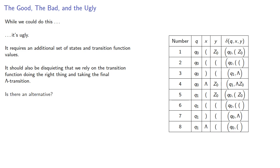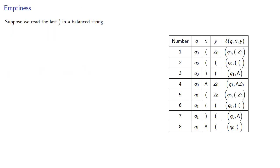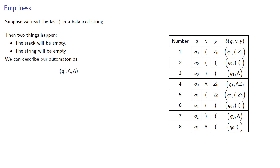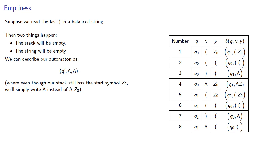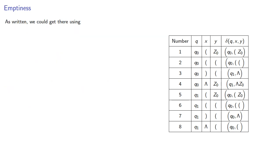So is there an alternative? Let's think about this. Suppose we read the last closed parenthesis in a balanced string — then two things have to happen: the stack will be empty, and the string will be empty. We can describe our automaton as being in some state with an empty string and an empty stack, where even though our stack still has the start symbol z0, we'll simply write lambda instead of lambda z0. As written, we could get there from q0, close open, derives q1, lambda, lambda, or q1, close open, derives q1, lambda, lambda.